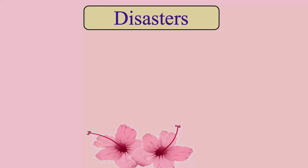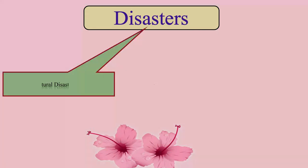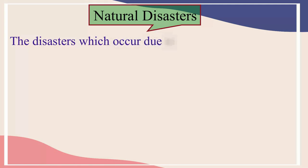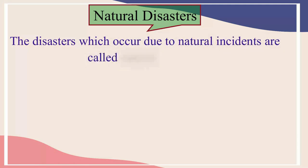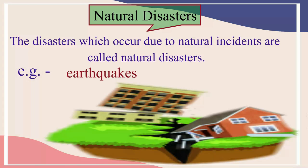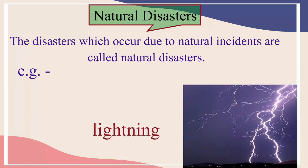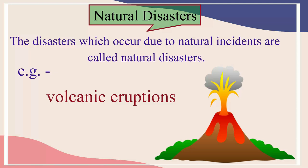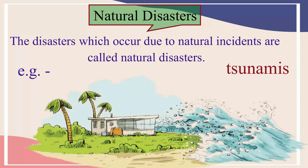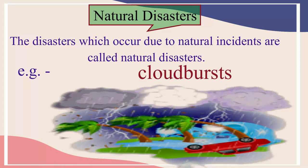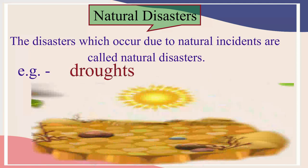On the basis of origin, disasters are of two types: natural disasters and man-made disasters. The disasters which occur due to natural incidents are called natural disasters. For example, earthquakes, landslides, lightning, volcanic eruptions, tsunamis, cyclones, cloud bursts, floods, droughts, etc.